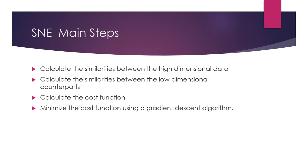These are the main steps of SNE. First, we are going to calculate the similarities between the high dimensional data points and convert these similarities into probabilities. After that, we are going to do a similar thing for the low dimensional space as well — that means we are going to calculate the similarities between the low dimensional counterparts. But before that, we first initialize the locations of our low dimensional space, and after that we convert these similarities into probabilities.